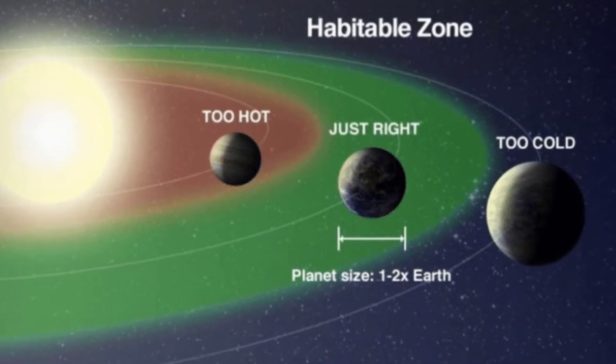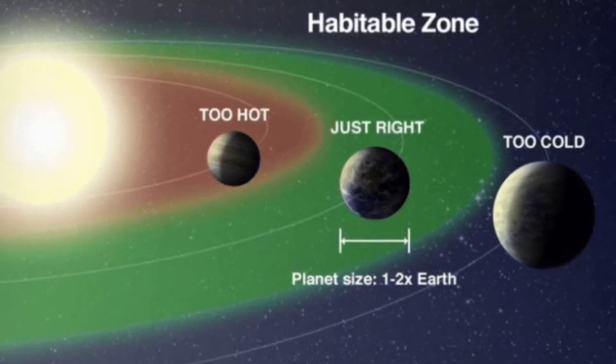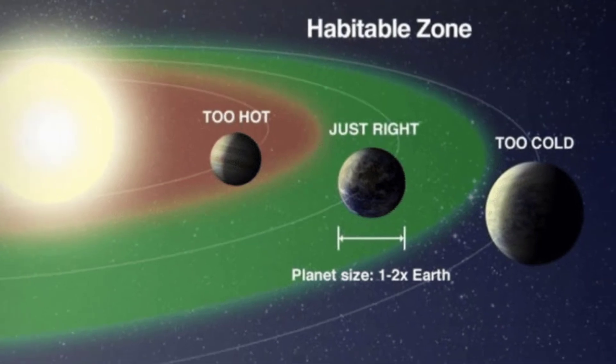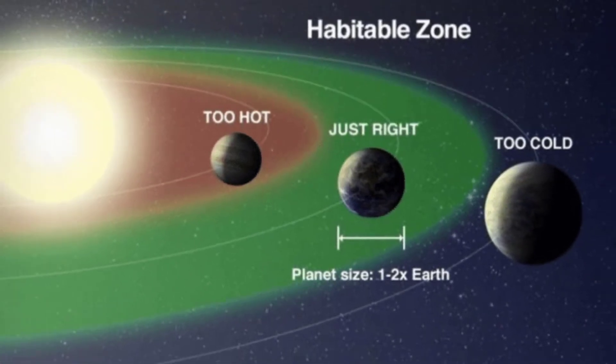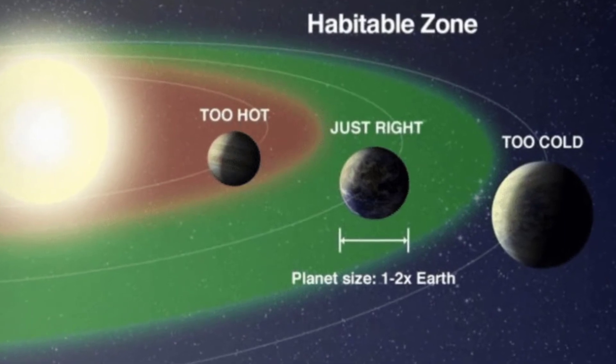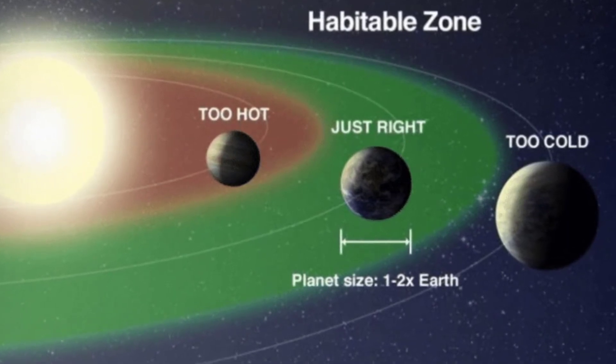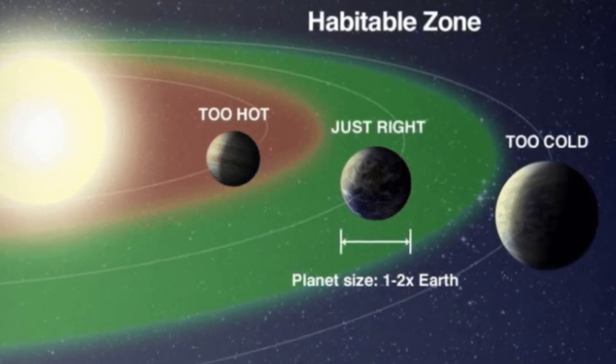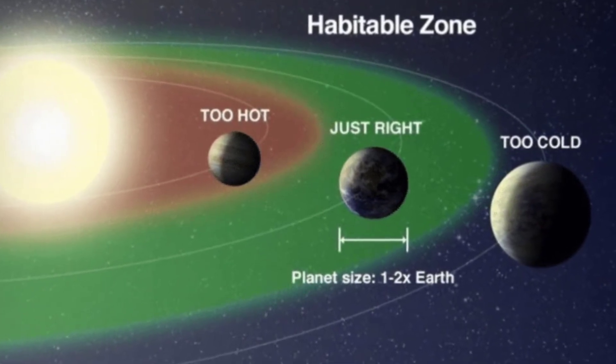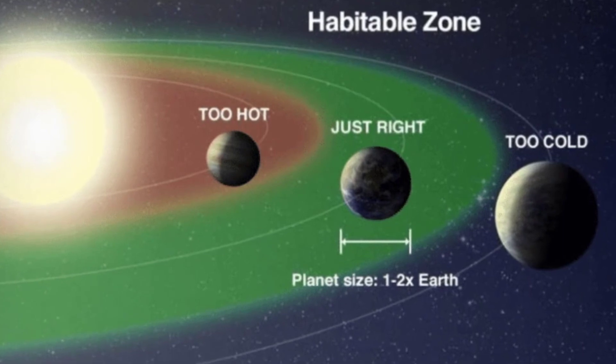Earth is near a star with average size. Stars like the sun have a lifespan of 10 billion years, and during most of this time, radiant energy is emitted at a constant level. Earth's proximity to the sun allowed enough time for the evolution of humans on this planet millions of years ago.